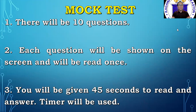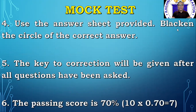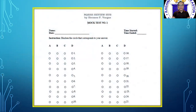The very essence of our review today is the MAC test. There will be 10 questions. Each question will be shown on the screen and will be read once. You will be given 45 seconds to read and answer. Timer will be used. Use the answer sheet provided. Blacken the circle of the correct answer. The key correction will be given after all questions have been asked. The passing score is 70%, equivalent to 7 points. I hope you downloaded this on our FB group and Enquist Review Hub.